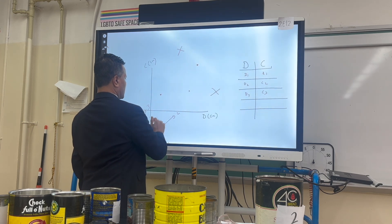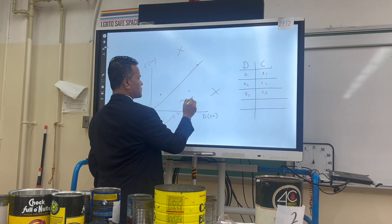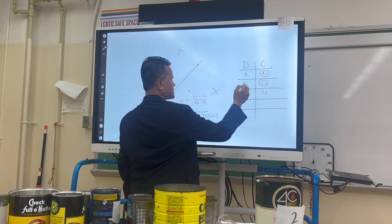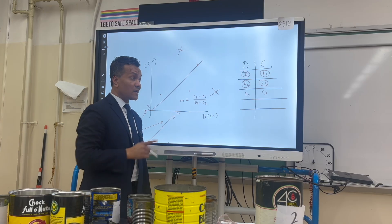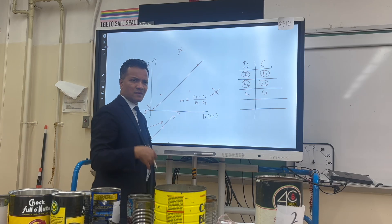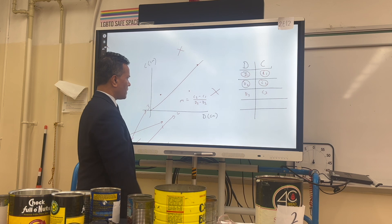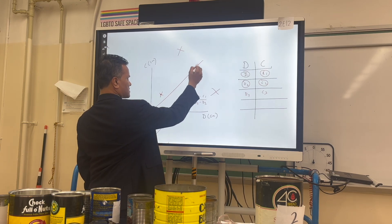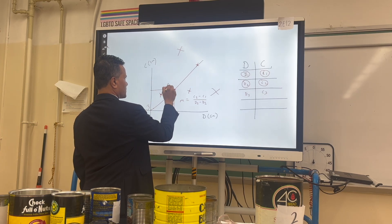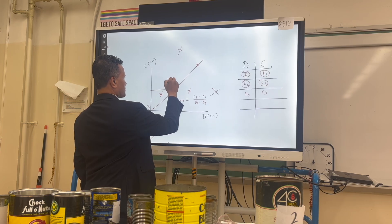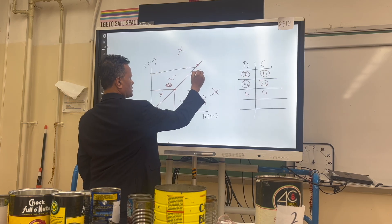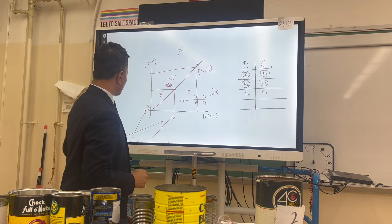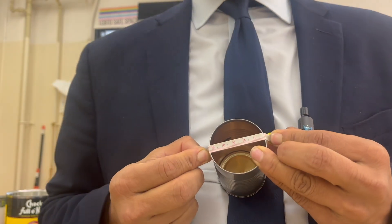To find the slope of the best-fit line, you pick two points from the line itself — for example using (d1, C1) and (d2, C2) — and calculate (C2 − C1) / (d2 − d1). Once you have drawn the best-fit line, forget the data table. Do not use the original three data points to calculate slope; you must pick new points directly from the line.